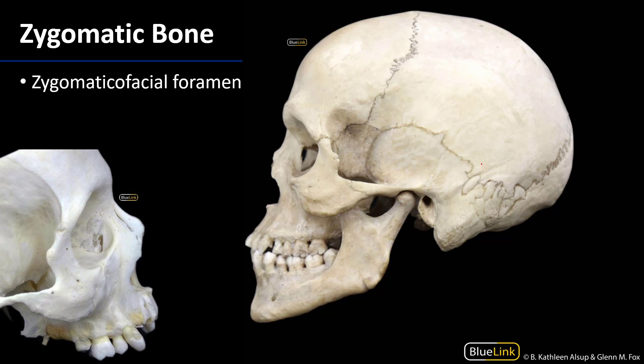Next up we have the zygomatic bone, also known as the zygoma — these are your cheekbones. Your zygomatic bones are good attachment sites for a lot of the smiley muscles of facial expression, the ones affecting the movement of the upper lip or the superior lateral movement of the angle of the mouth. We also have the zygomaticofacial foramen.